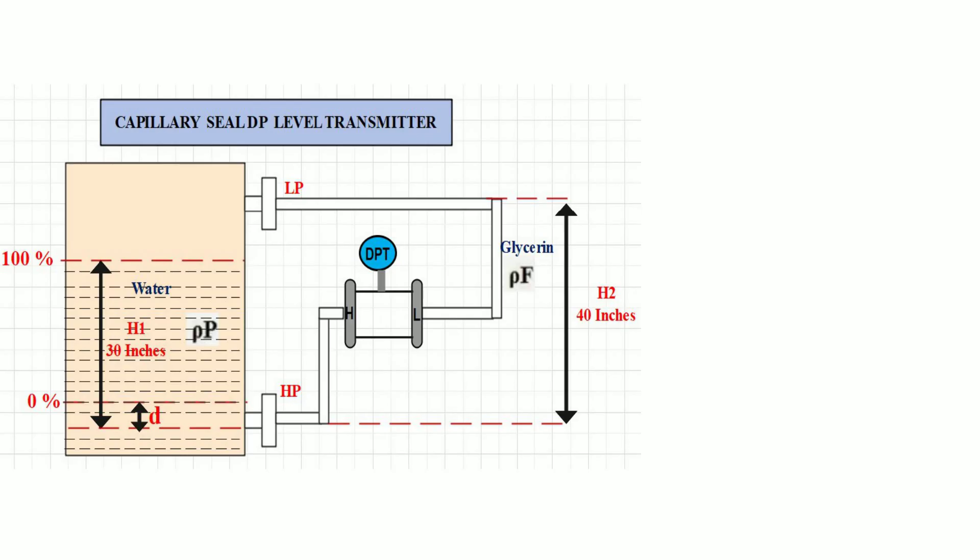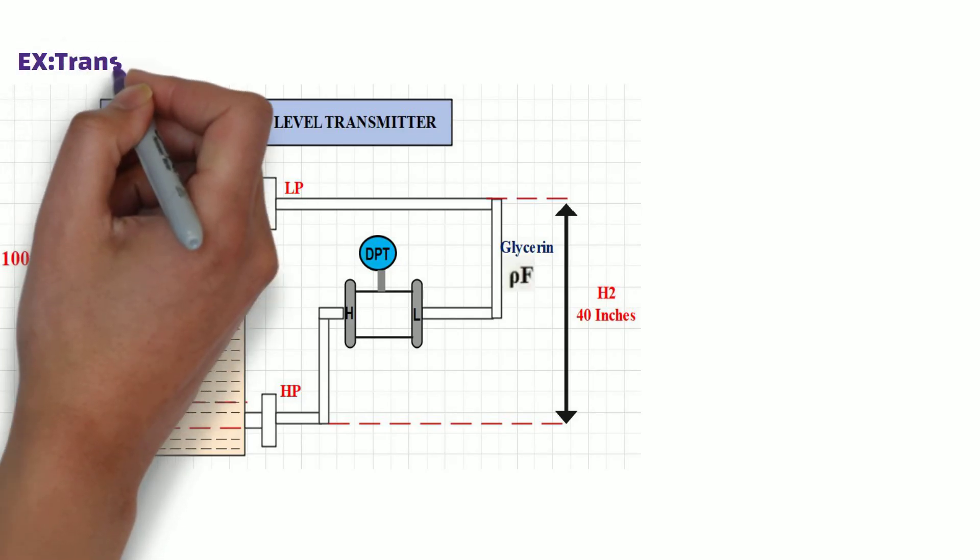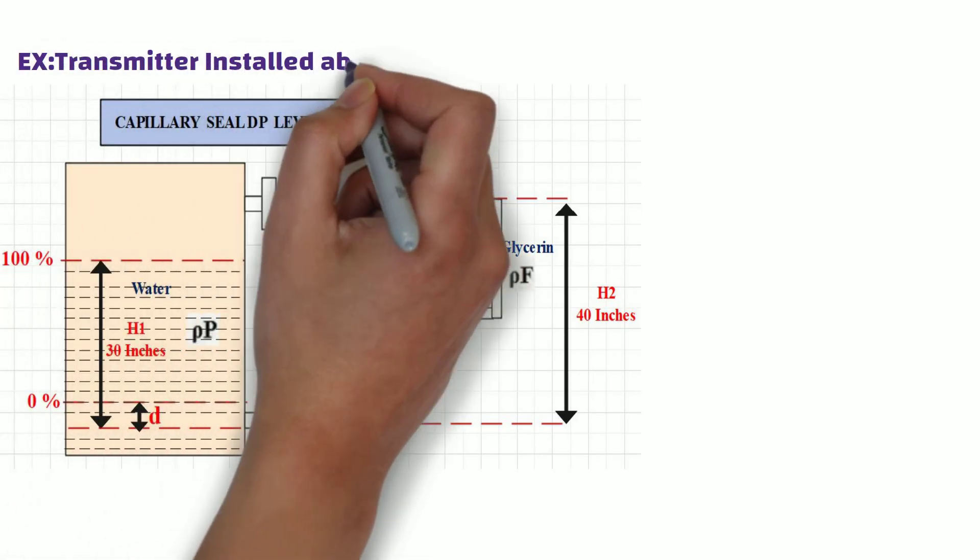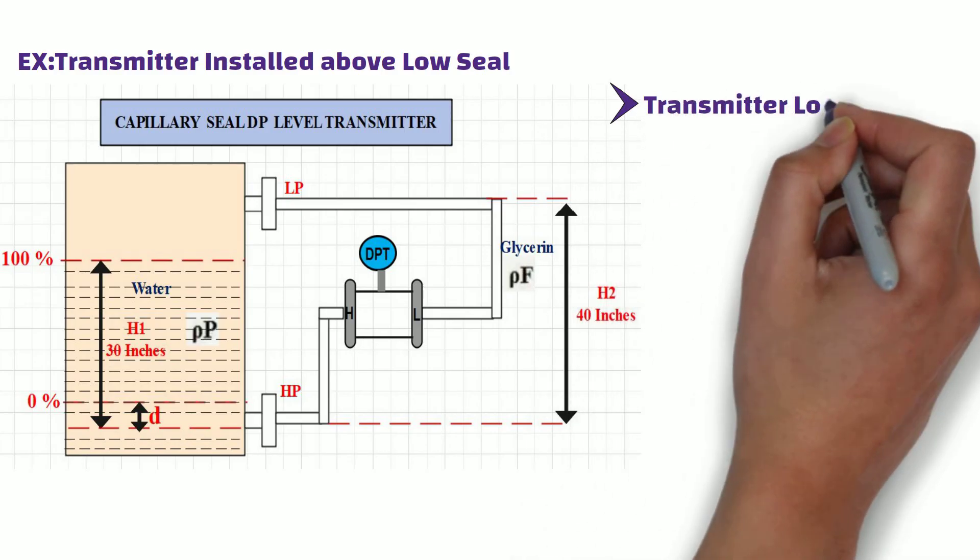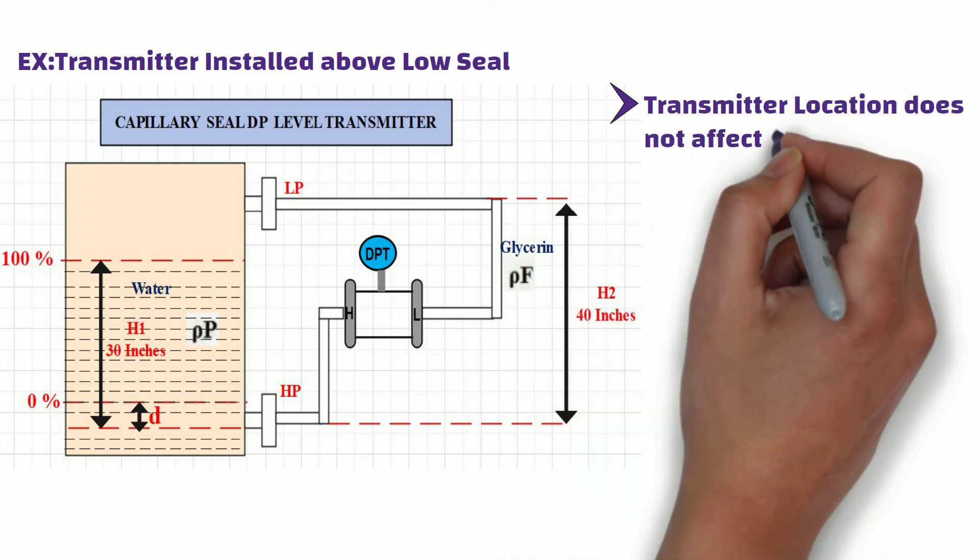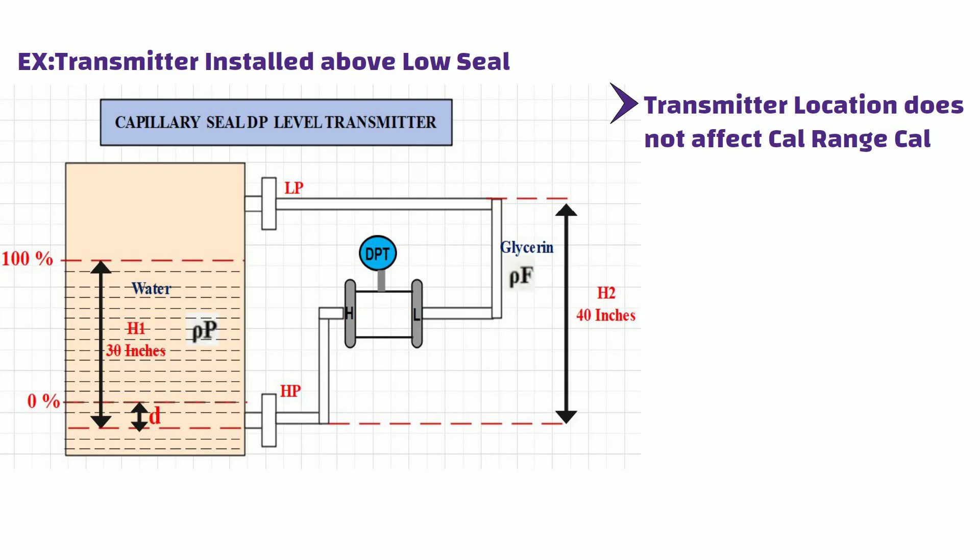As you can see, this is the example when the DP transmitter is installed above the low seal, and 0% level is also above the low seal. However, as we discussed earlier, transmitter location does not affect calibration range calculation when dual seals are used.